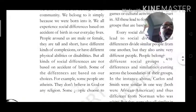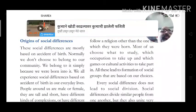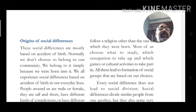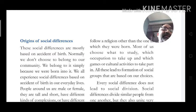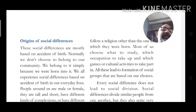Some people choose to follow religions other than the one in which they were born, while others follow the religion of their birth — Hindu, Muslim, Christian, or Sikh. Most of us choose what to study, which occupation to take up, and which games or cultural activities to participate in. All these lead to the formation of social groups based on our choice.